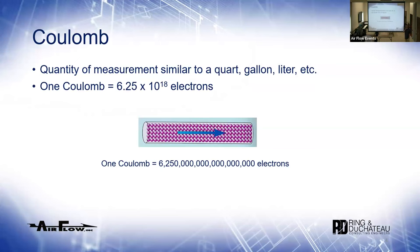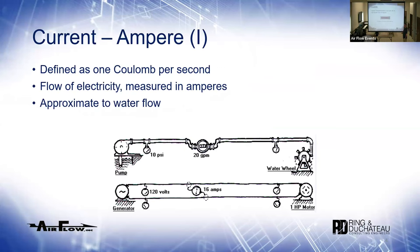Starting with the basics — we're not going to the quantum level for what particles are. The Coulomb is a bunch of electrons: 6.25 times 10 to the 18 electrons. I'm trying to equate this to mechanical stuff, so think of it like water — like a gallon of water. It's a gallon of electricity, something like that. That's what we're talking about on a basic level: a negatively charged particle, which is an electron.